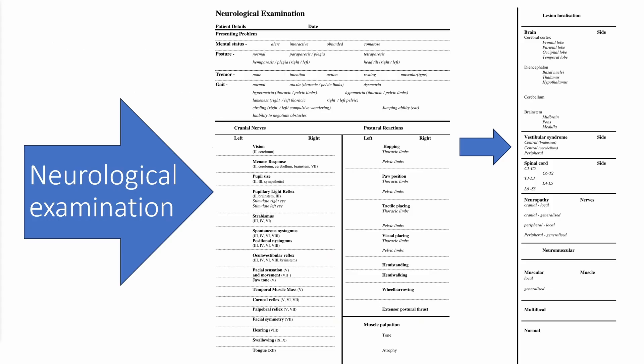We're going to go through the neurological examination in this dog. The aim of the neurological examination is really to do two things: the first is to localize the lesion, and then use that localization to give you a differential diagnosis — what could be the cause — and also to help with prognostication. It's easiest to go through a checklist, which helps you do it in a logical order.